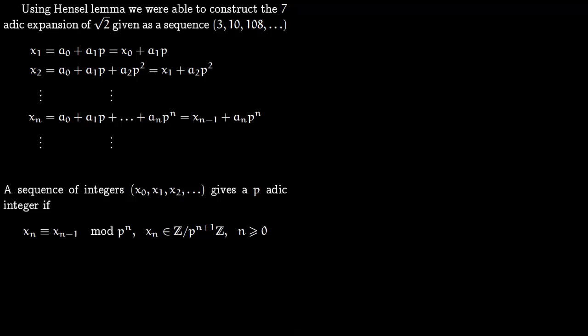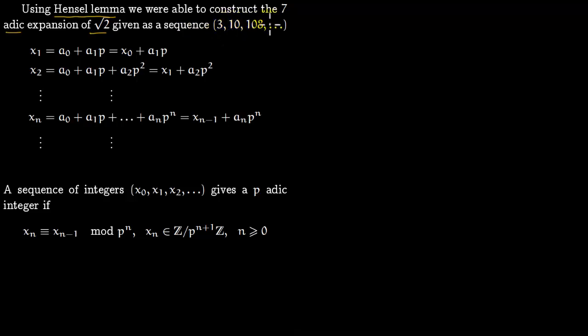In this lecture we want to introduce p-adic integers. First, recall that using Hensel's lemma we were able to construct the 7-adic expansion of the square root of 2, and we found that this expansion was the sequence of integers: 3, 10, 1, 0, 8, and so on. This was discussed in a previous lecture.